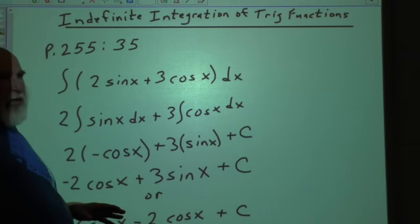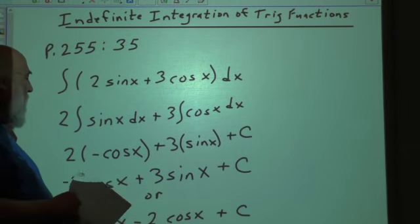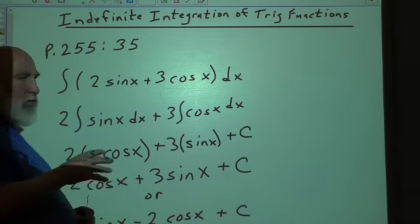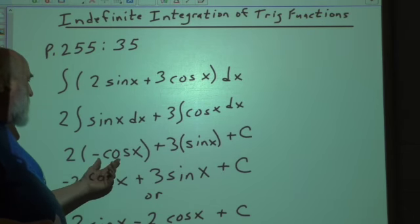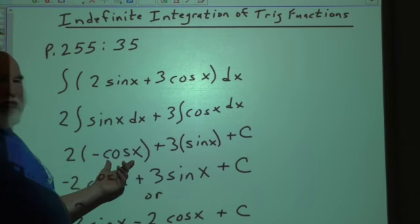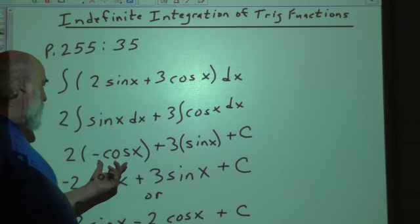Now, if you find sine x, the derivative of sine x in your column, it says that the function form is negative cosine x. So replace this with that.